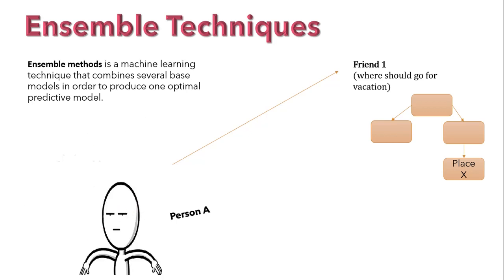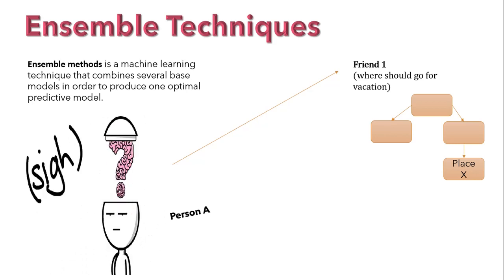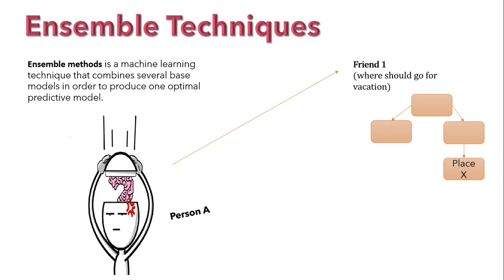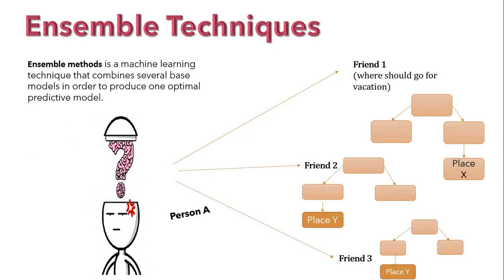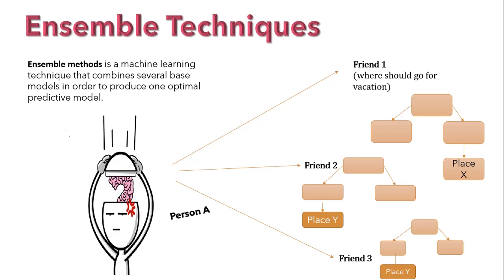Now person A wants to ask some more friends as he is not fully convinced with this guy. So his other friends will also ask some random questions from him and provide a final destination where he should go for a vacation. Now person A will consider the place with most votes.